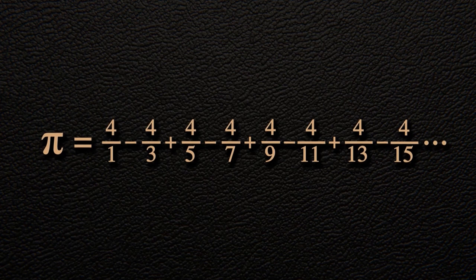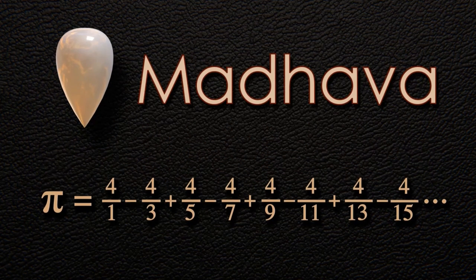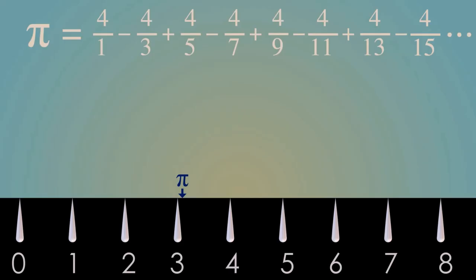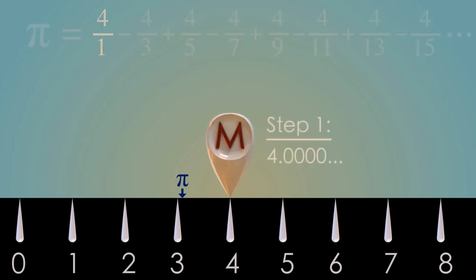This is known as the Madhava method. It was first discovered in the Middle Ages in India, and then was rediscovered about 300 years later in Europe. If we look at the first term, that's 4 over 1, which gives us 4.0, which is too big. But to get closer to pi, we're going to subtract 4 thirds from that.